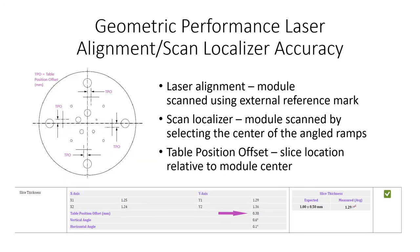Verification of laser alignment and scan localizer accuracy is reported as the table position offset parameter, displayed as TPO. The table position offset is the distance between the wire ramp center and the module center, then converted with the tangent of the ramp angle to the z-axis offset.